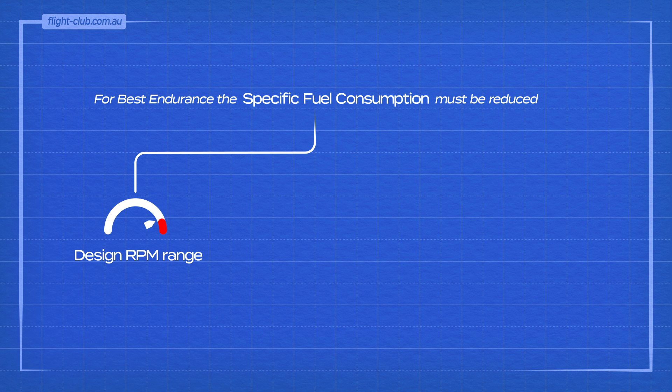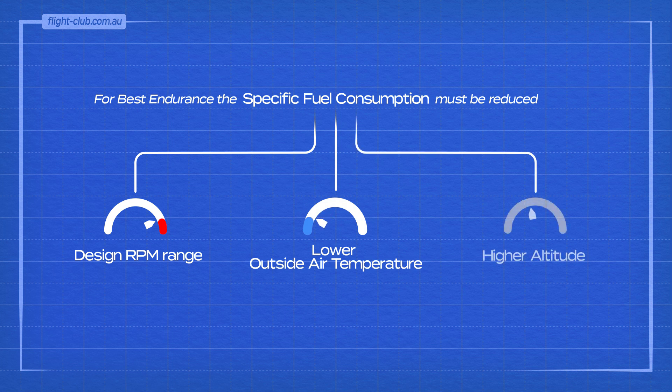Specific fuel consumption may also be reduced by flying in lower outside air temperature and at higher altitude. Generally, endurance improves with an increase in altitude, but once the design RPM is exceeded, higher altitude may reduce endurance.